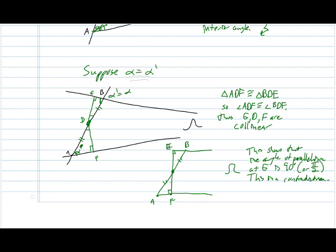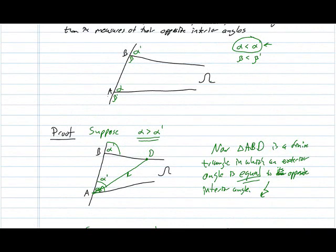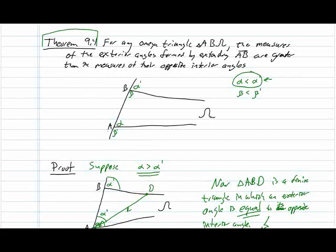So, alpha prime can't be smaller than alpha. And alpha prime can't be equal to alpha. So it must be that alpha prime is greater than alpha. And again, the same argument will apply to beta and beta prime in exactly the same way.